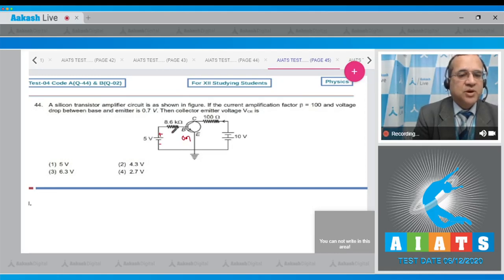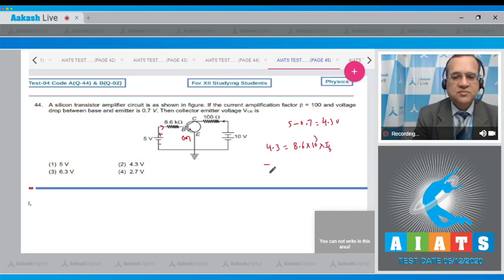Therefore the potential drop across the resistance will be equal to 5 minus 0.7, which equals 4.3 volt. Now the current through this, which is called base current, can be calculated. Because 4.3 volt should equal the resistance 8.6 times 10^3 into the current through the base circuit. So base current equals 4.3 divided by 8.6 times 10^3, which becomes 0.5 times 10^-3 ampere.